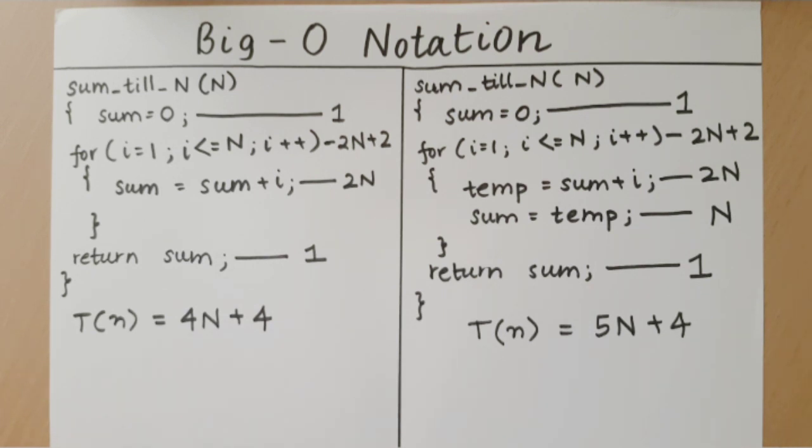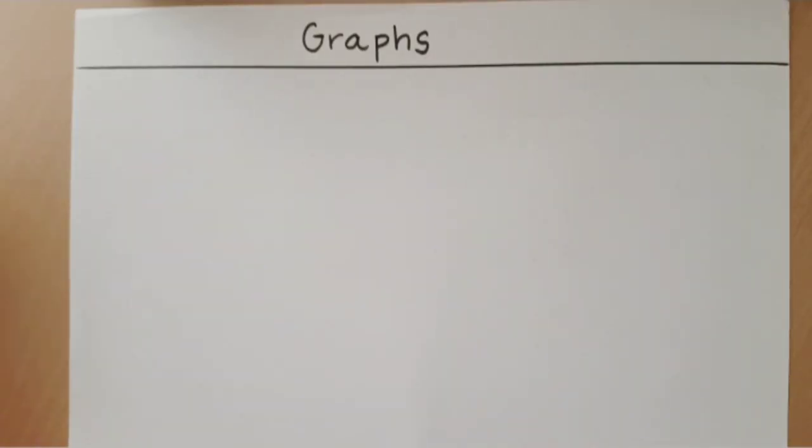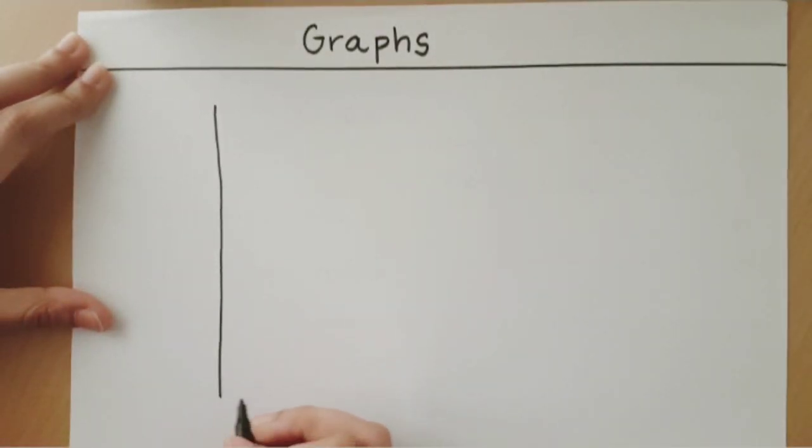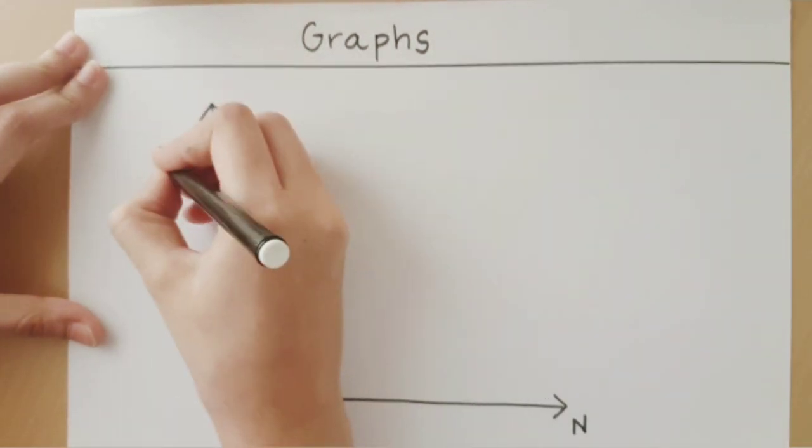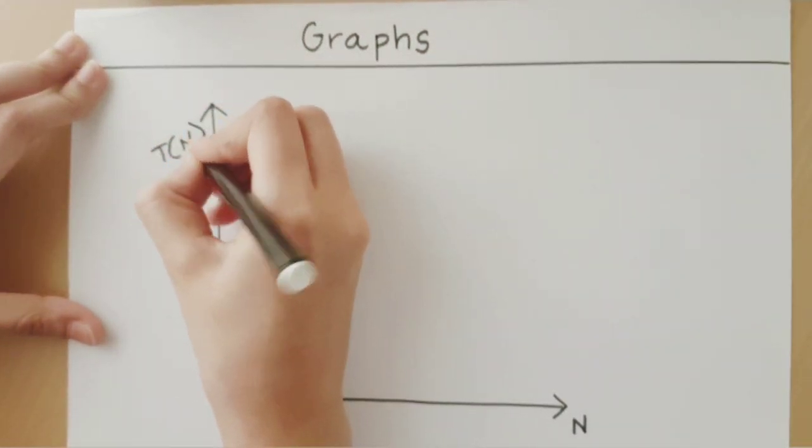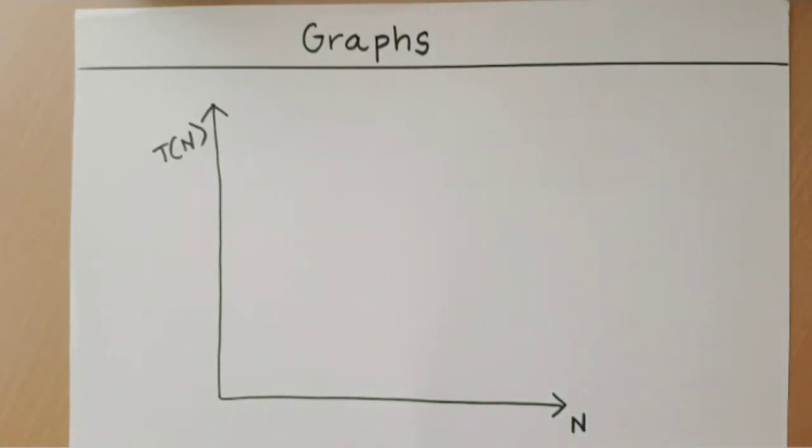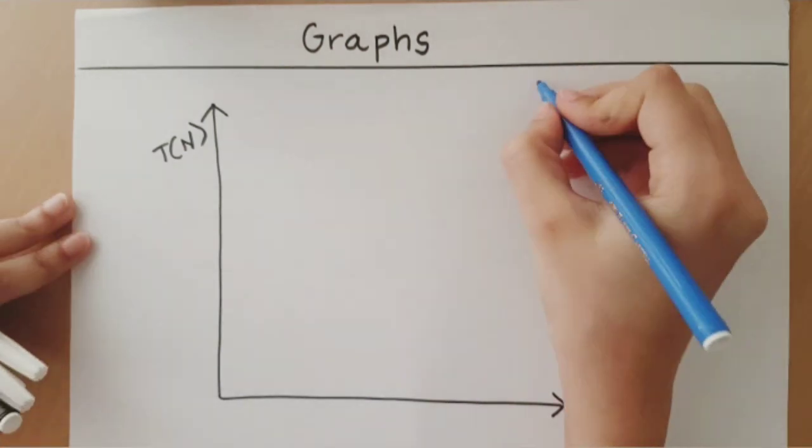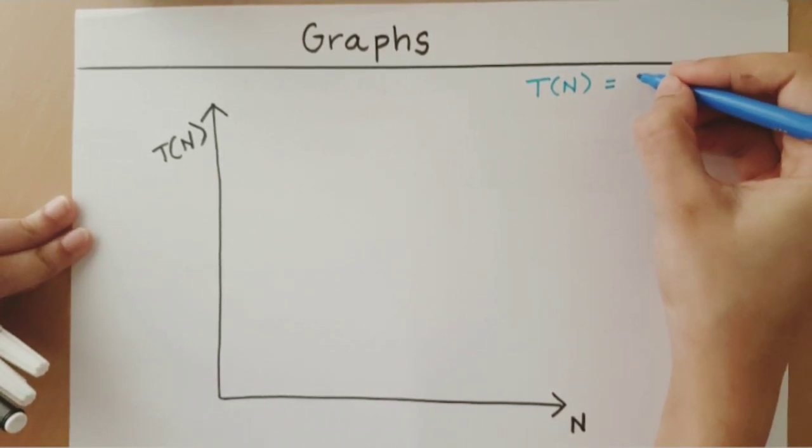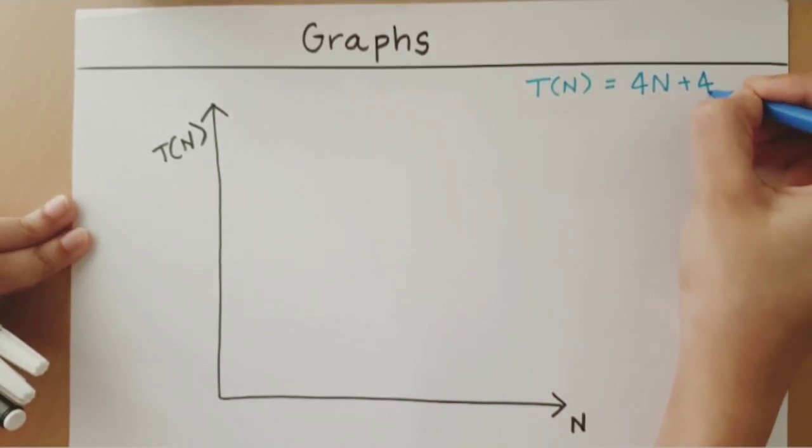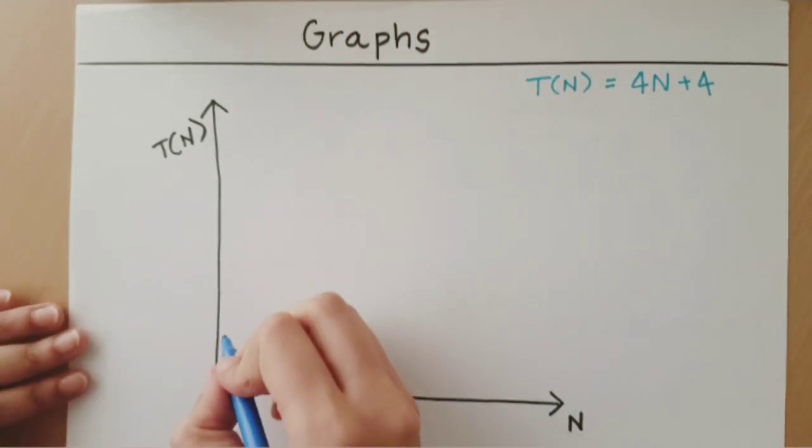Now let's look at the graph made for the two versions of the time. On our graph, I'm going to take the x-axis as the input size and the y-axis as the time. So our first time was 4n plus 4. When I plot that, I get a line like this.